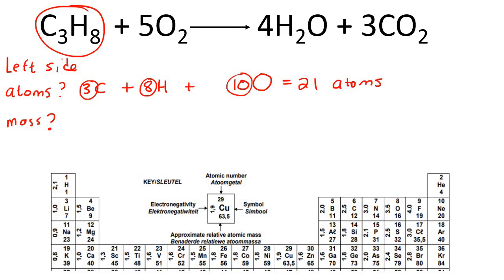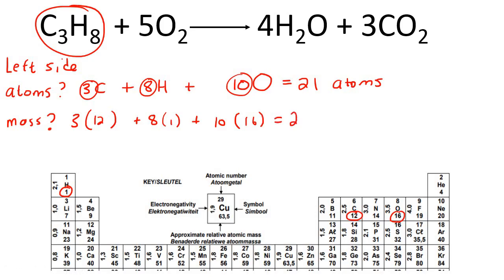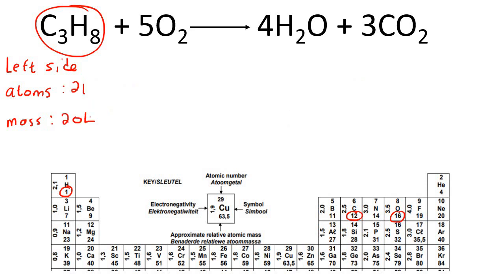Now if we had to go work out the mass, we know that three carbons would be three times 12 — the mass of carbon is 12. There are eight hydrogens, each hydrogen has a mass of one. And then there are 10 oxygens, and each oxygen has a mass of 16. Go ahead, calculate that, and that'll give you 204. So let's just go write that down quickly.